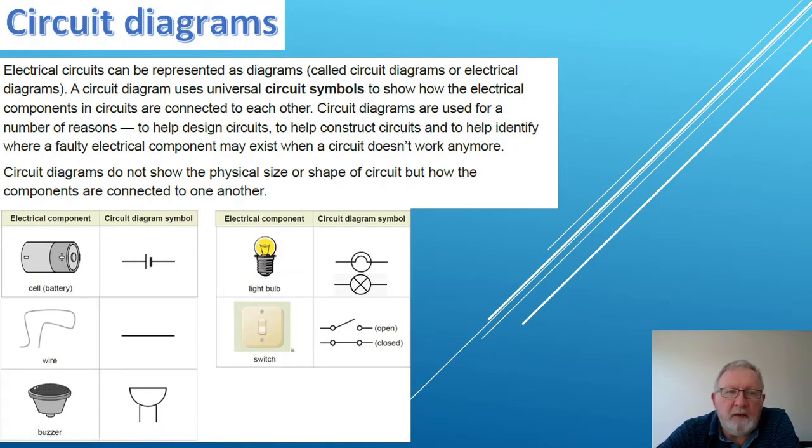So the second thing we're looking at is how to draw circuit diagrams and there is a correct way to draw a diagram scientifically. Electrical circuits can be represented as diagrams called circuit diagrams or electrical diagrams. And a circuit diagram uses universal circuit symbols, and that means everybody uses much the same ones and so they're recognized worldwide. And these are used to show how electrical components in circuits are connected to each other. So they're useful for a number of reasons. You can design circuits using them, but you can also help to construct circuits and to help identify where faulty electrical components may exist when a circuit doesn't work anymore.